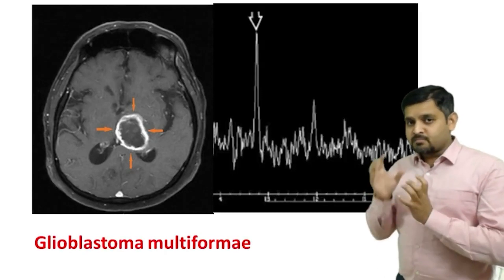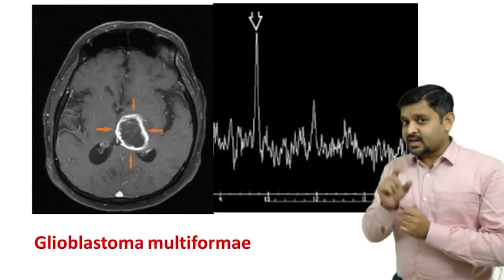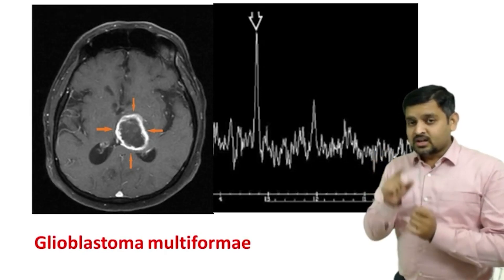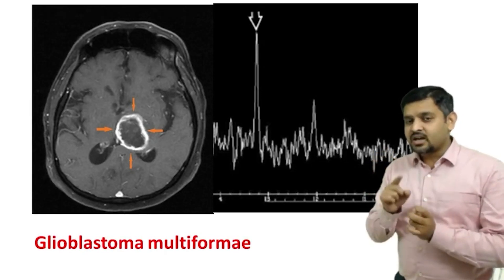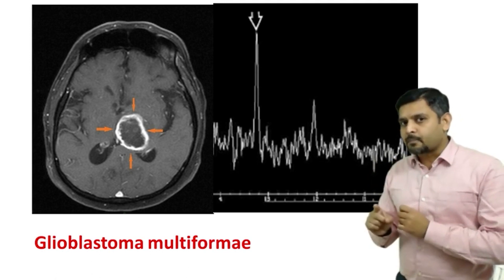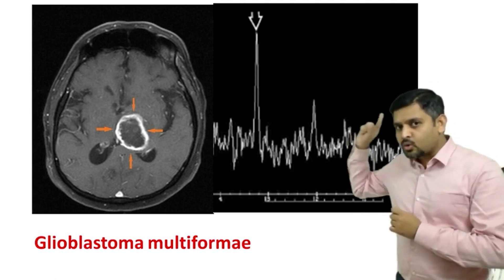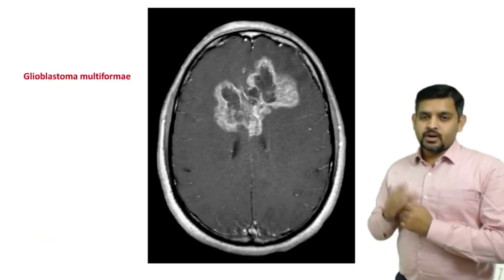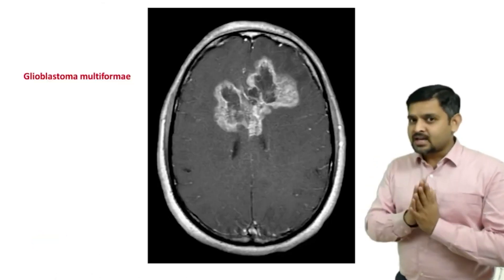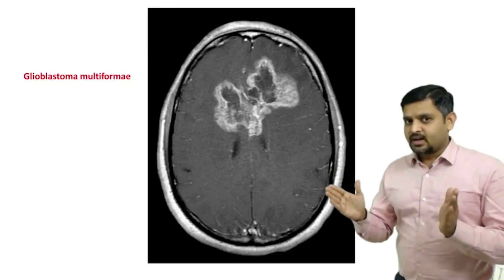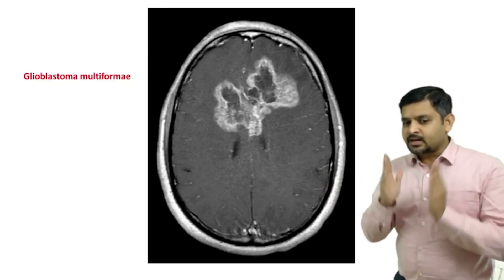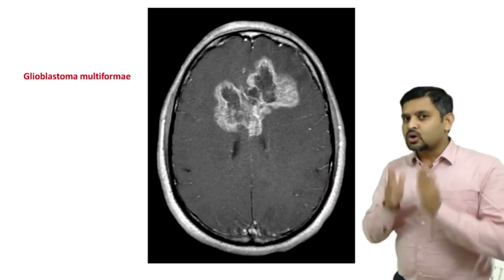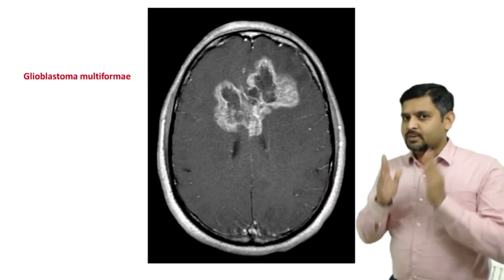Glioblastoma multiforme may be seen as a ring-enhancing region like an abscess. The catch here is spectroscopy showing a choline peak. If you see a mass which is crossing the midline, a typical butterfly glioma is also a glioblastoma multiforme.